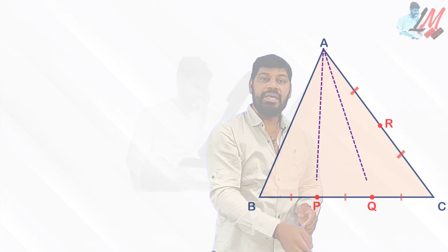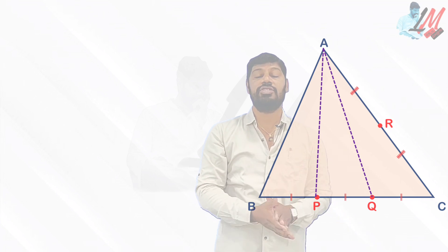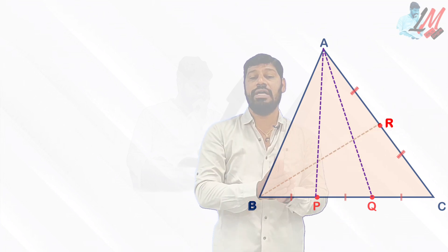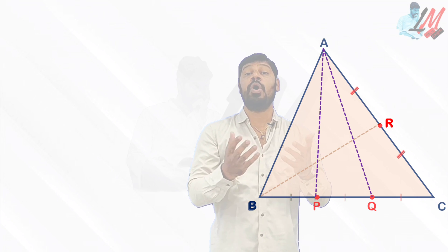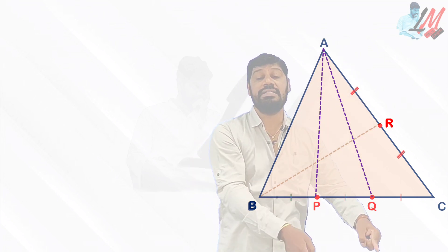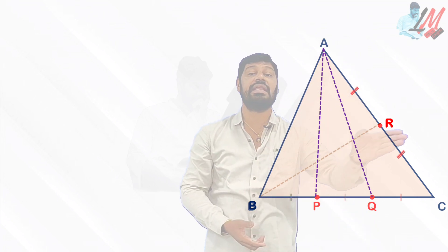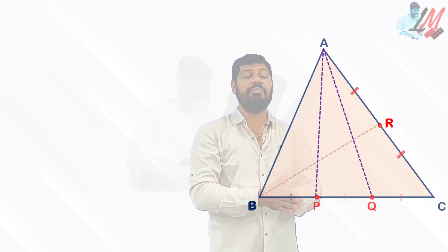Now AP, AQ were joined. Similarly BR was also joined. Then what they are asking: in what ratio do these two lines AP and AQ divide the line BR?